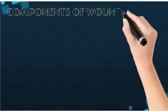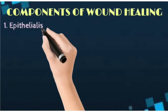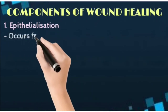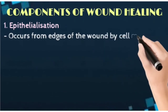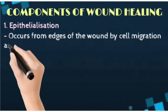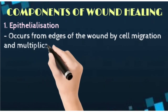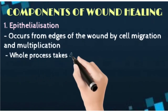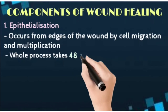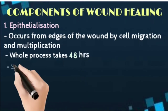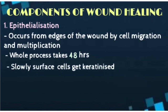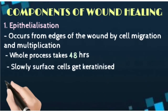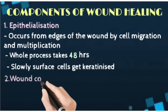The components of wound healing: the first and most important step is epithelialization. It starts from the edges of the wound, then cell migration and multiplication occur. This whole process takes 48 hours. Slowly keratinization of the surface also takes place as the cells become keratinized.